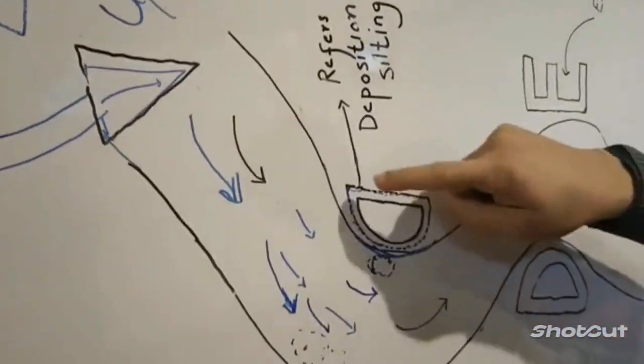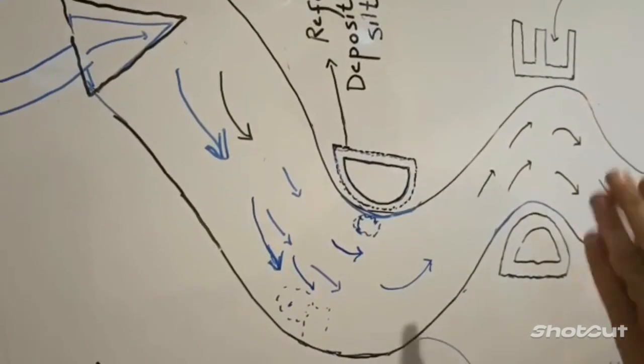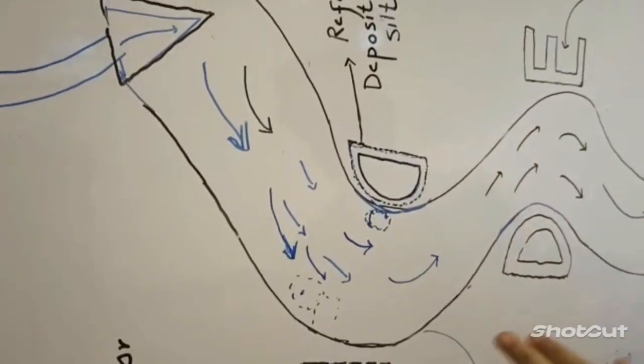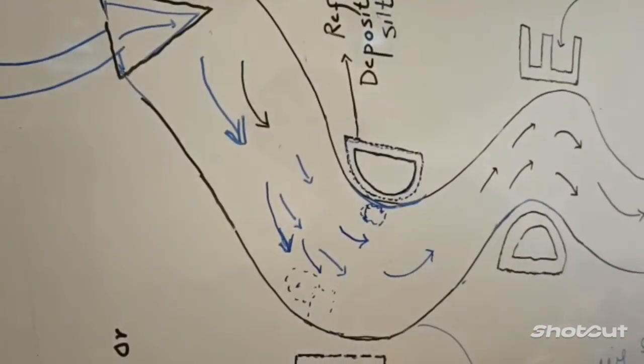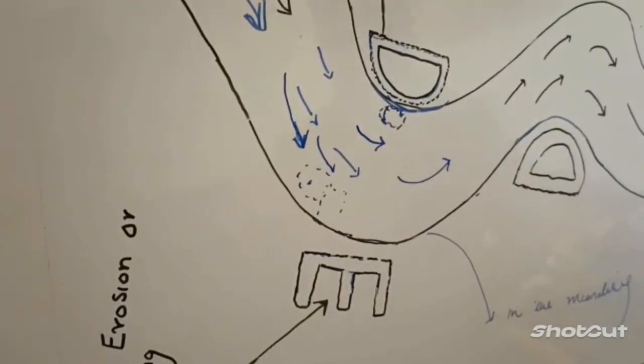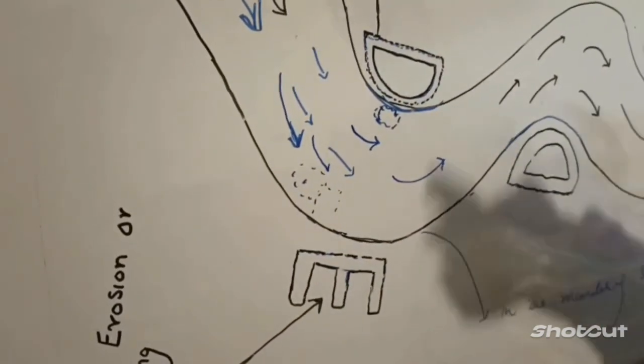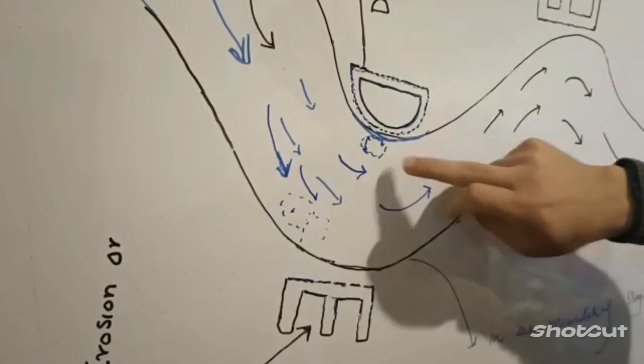So at the point where a D type shape is forming, deposition will always occur there, and at the opposite point there will be scouring.